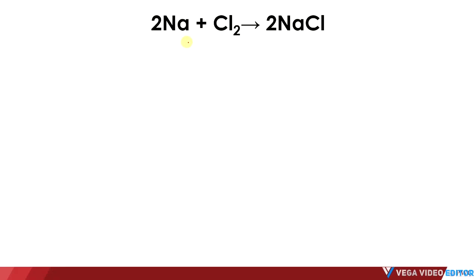We have here the reaction of 2Na reacting with 1Cl₂ to produce 2NaCl. The coefficients here tell us the amount of each substance in comparison to another. The ratio here is 2:1:2, and these coefficients in the balanced chemical equation say that for every 2 Na's, I need 1 Cl₂, and that can produce 2 NaCl. This ratio is constant for any amount of these substances in this reaction.